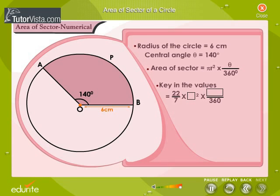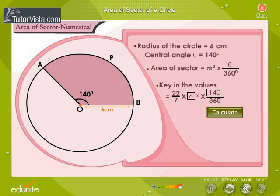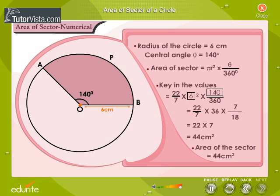Key in the values of R and theta. If the area of the sector is equal to 44 square centimeters.